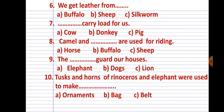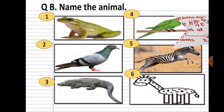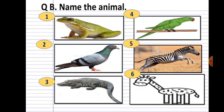Number 10: tusks and horns of rhinoceros and elephant were used to make _____. Options are a) ornaments, b) bag, and c) belt. So choose correct option, right tick. These are ten multiple choice questions, choose the correct options.